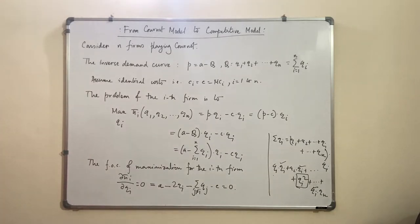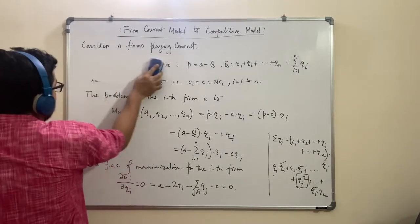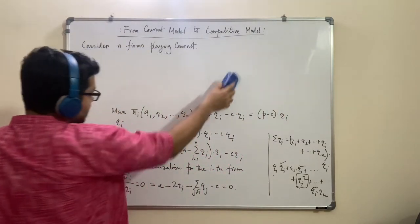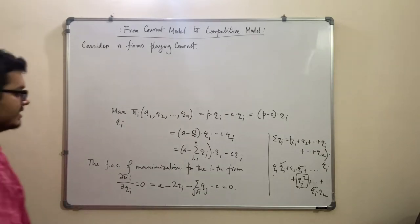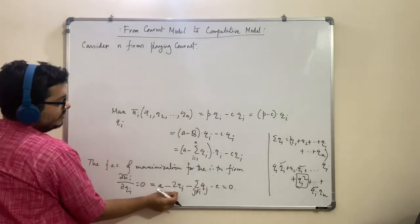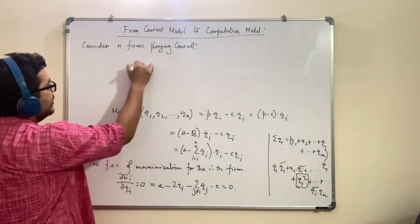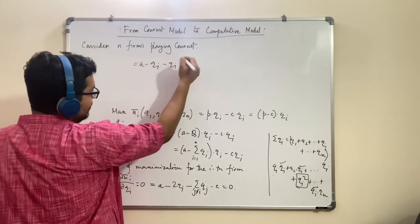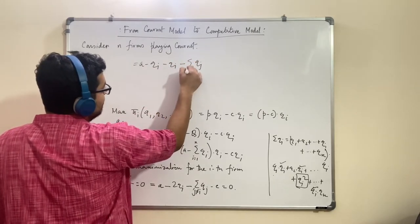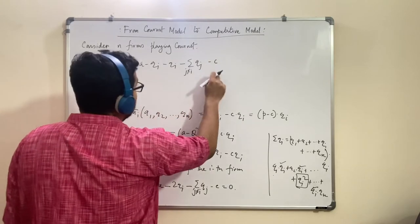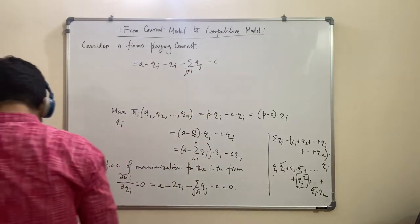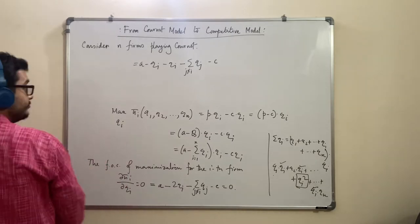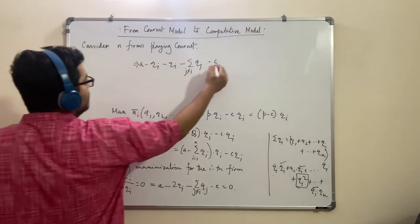We will use a trick of calculation which is very important so that we can solve it easily and successfully show that price equals MC. From the 2qi we take out one qi, so the expression becomes: A minus qi minus qi minus sum over qj (j not equal to i) minus c = 0.